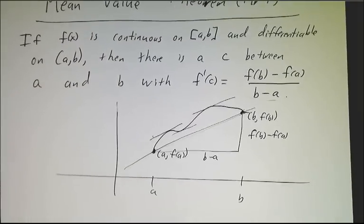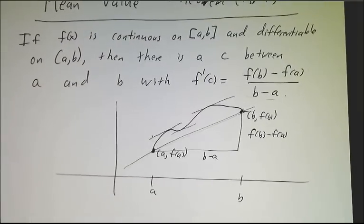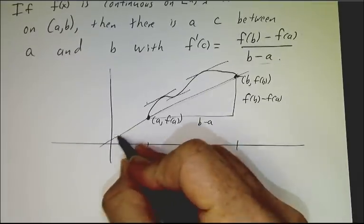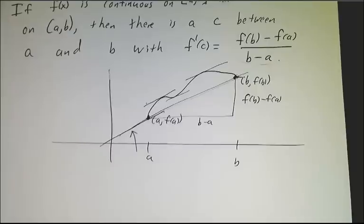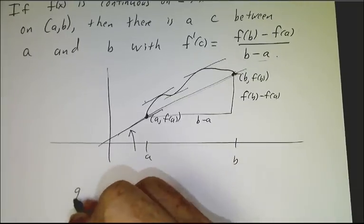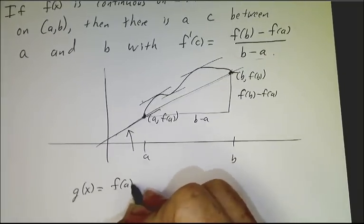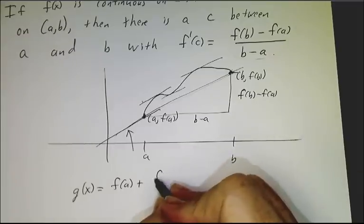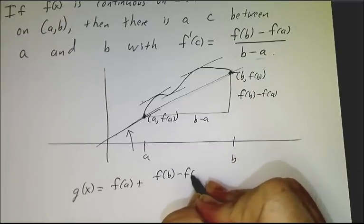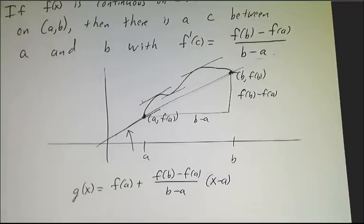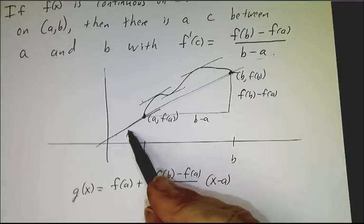So the way that we prove this theorem is that we define a new function. Let's let g(x) be f(a) plus this slope [f(b) minus f(a)] over [b minus a] times x minus a. So that's the equation of this line.